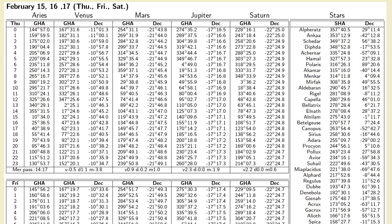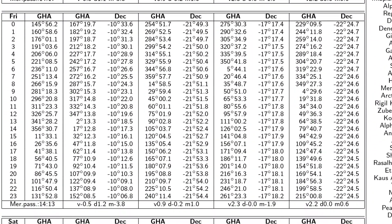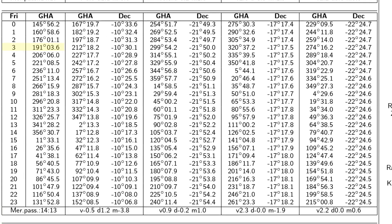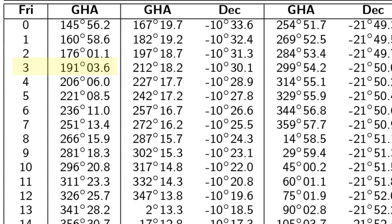Looking at the table for Aries on Friday the 16th, we can pull out the value that corresponds with the time that we need. As with everything in the almanac, we use universal time, so we're going to need row 3 for 0330. This gives the Greenwich Hour Angle of Aries as 191 degrees, 03.6 minutes.